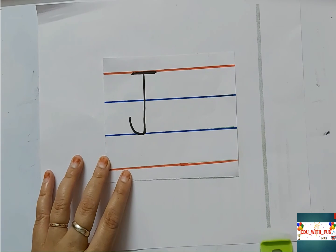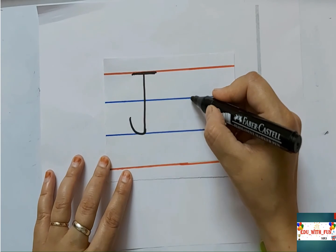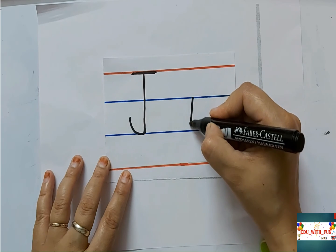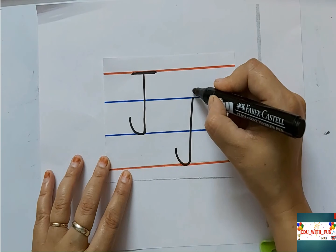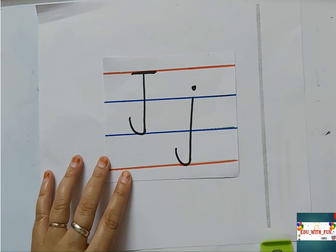Small letter J is also similar but it will start from the second blue line to fourth red line. Make a curve like this and draw a dot. Yes, that's it. This is capital letter J and small letter J.